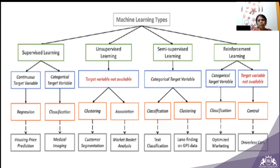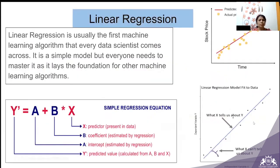Reinforcement learning works based on rewards and punishments. If it is a classification problem, an example is optimized marketing. If the target variable is not available, an example is driverless cars. Now let's try to understand what linear regression is.